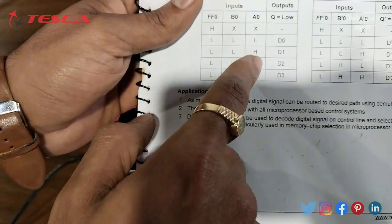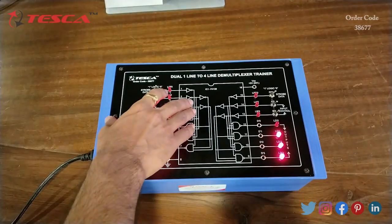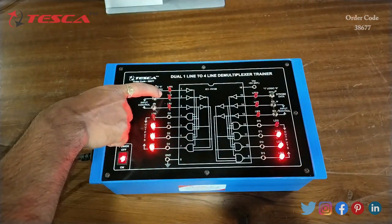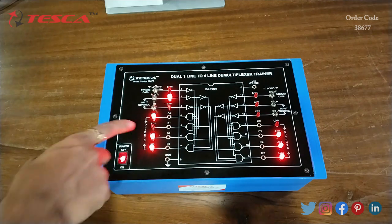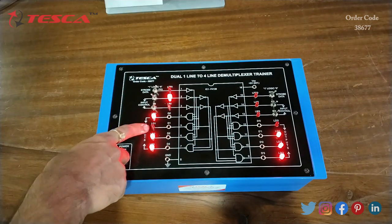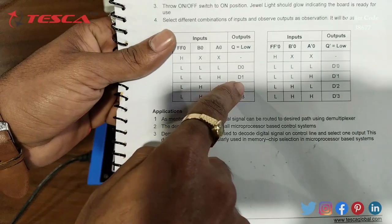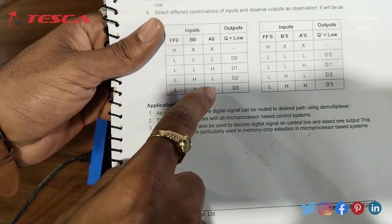If we give high input at A0, that is 1, we are getting low output at D1 as mentioned in the truth table.